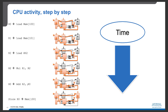The next instruction is the addition. In this case, the values from R2 and R0 are fed into the adder to perform the addition operation. The sum of these two numbers is stored back into register R0. During execution of this instruction, the load unit, store unit, and multiplication unit are all idle.